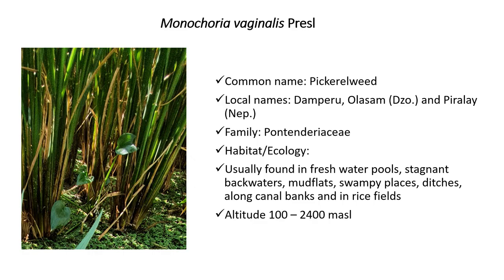Monochoria vaginalis is commonly known as pickerel weed and locally known as Damperu or Olasham in Dzongkha and Pirale in Nepali. It belongs to the family Pontederiaceae. It is usually found in freshwater pools, stagnant backwaters, mud flats, swampy places, ditches, along canal banks, and in rice fields. The altitude range for this weed is 100 to 2400 m above sea level.